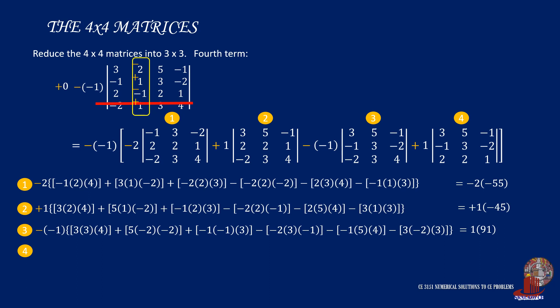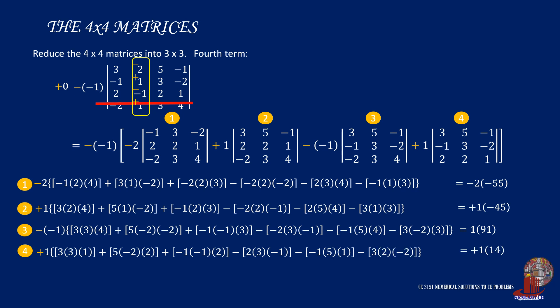Then the last 3 by 3 determinant is solved from 3, 3, and 1, with 5, negative 2, and 3, then negative 1, another negative 1, and 2. The negatives are from 2, 3, and negative 1, negative 1, 5, and 1, and also 3, 2, and negative 2. They are simplified as positive 14. Add all simplifications with their respective scalars and get 170. Now back to the original 4 by 4 term, we have a scalar of minus negative 1 multiplied by 170 to have positive 170.